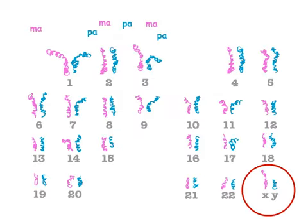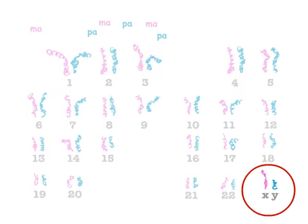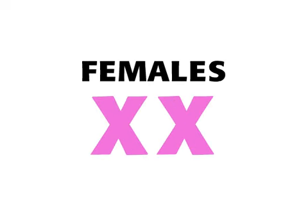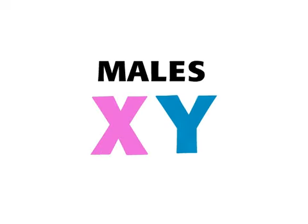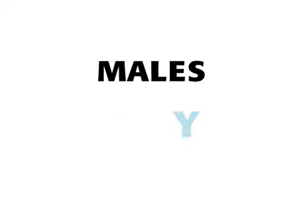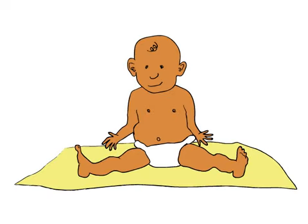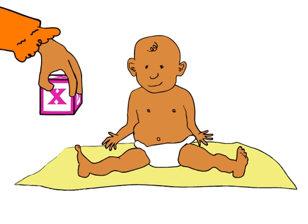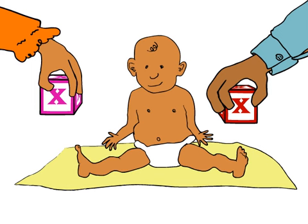The X and Y chromosomes, however, are special. Usually females have two X chromosomes, while males have an X and a Y. You get one of your X chromosomes from your mother. Whether you get your father's X chromosome or his Y chromosome determines your sex.